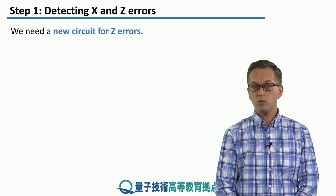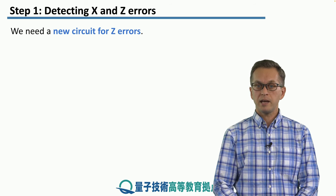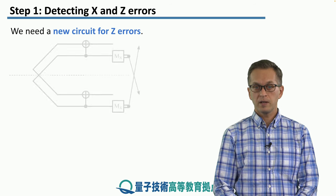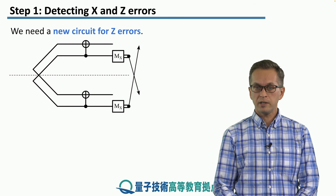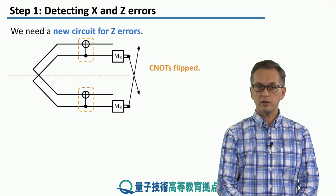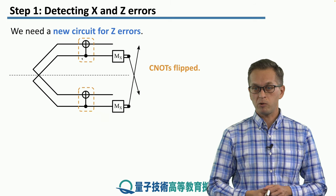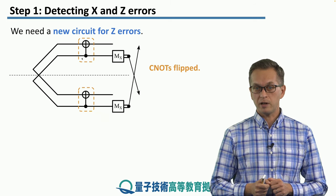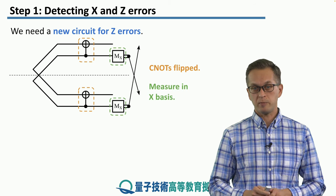So what do we do? We have to change our scheme a little bit. We have to introduce a new circuit that can detect Z errors. The circuit luckily is very similar to detecting X errors. The only thing that has changed is that we have flipped the control and the targets for these CNOT gates. So now the second pair acts as our control and the first pair is the target. And instead of performing measurements in the Z bases, we perform them in the X bases.